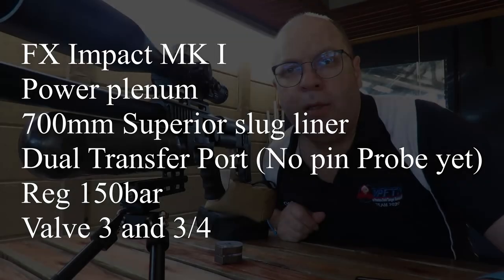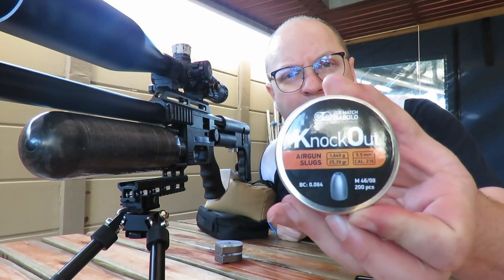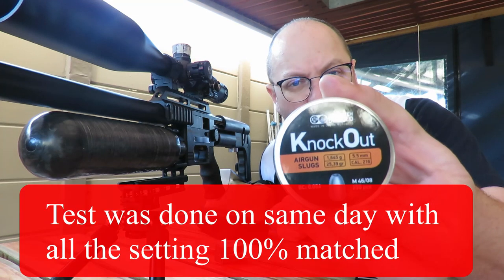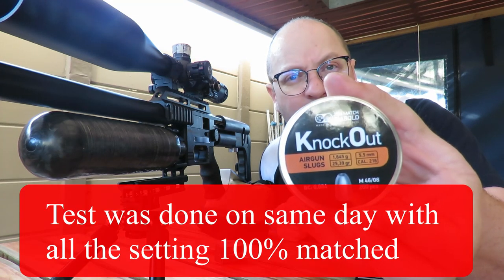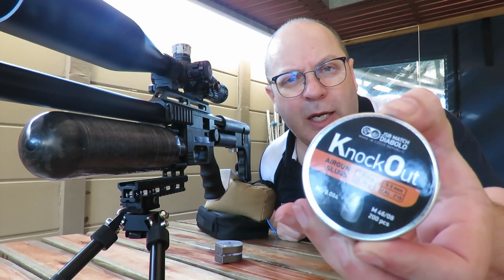No comparison would be complete without the JSP Knockout slugs, also in 5.5, 25.4 grain. Let's see how they stack up against the H&Ns.